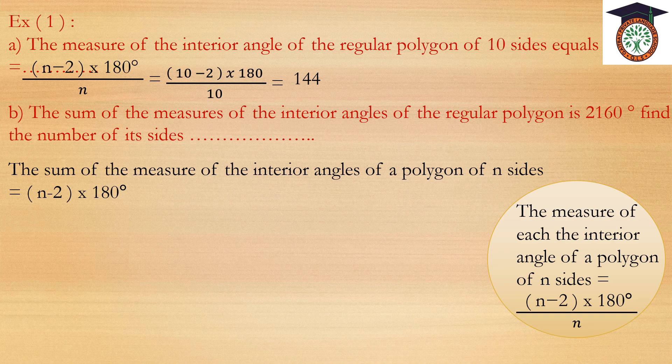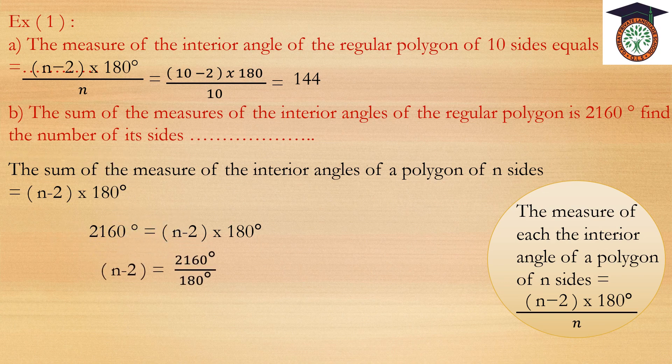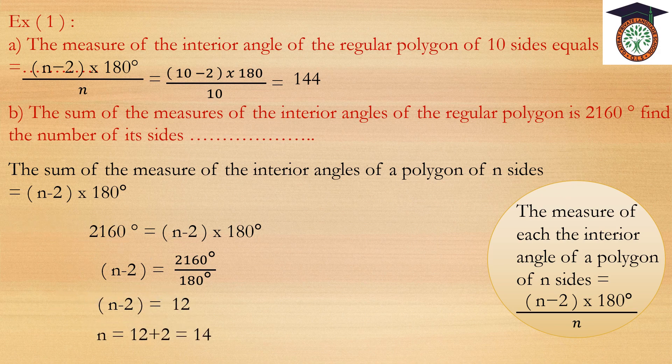The sum of measures of the interior angles of a regular polygon is 2160 degrees — find the number of sides. The sum of interior angles of a polygon of n sides is (n minus 2) times 180. So (n minus 2) times 180 equals 2160. Dividing both sides by 180: n minus 2 equals 12, so n equals 12 plus 2, which equals 14.